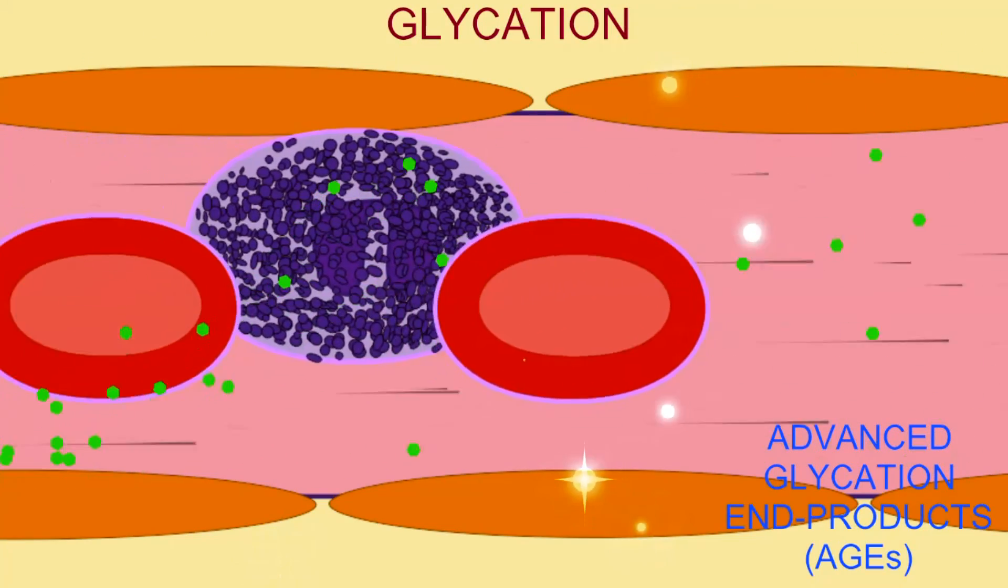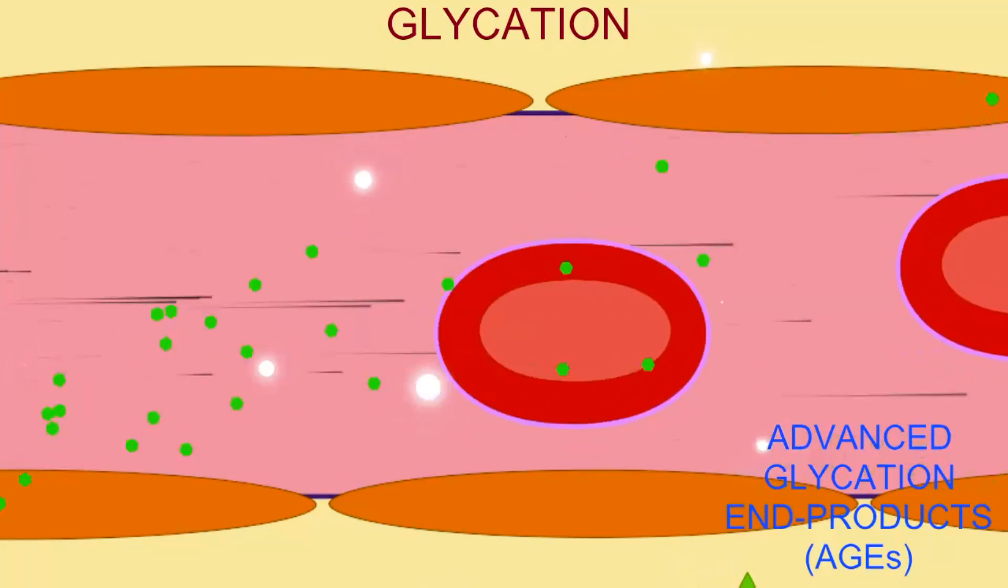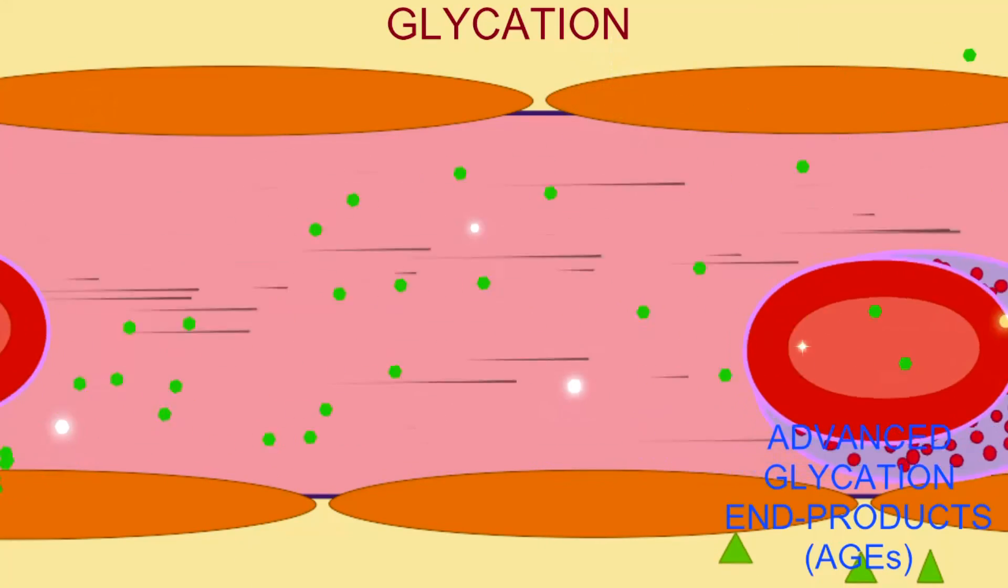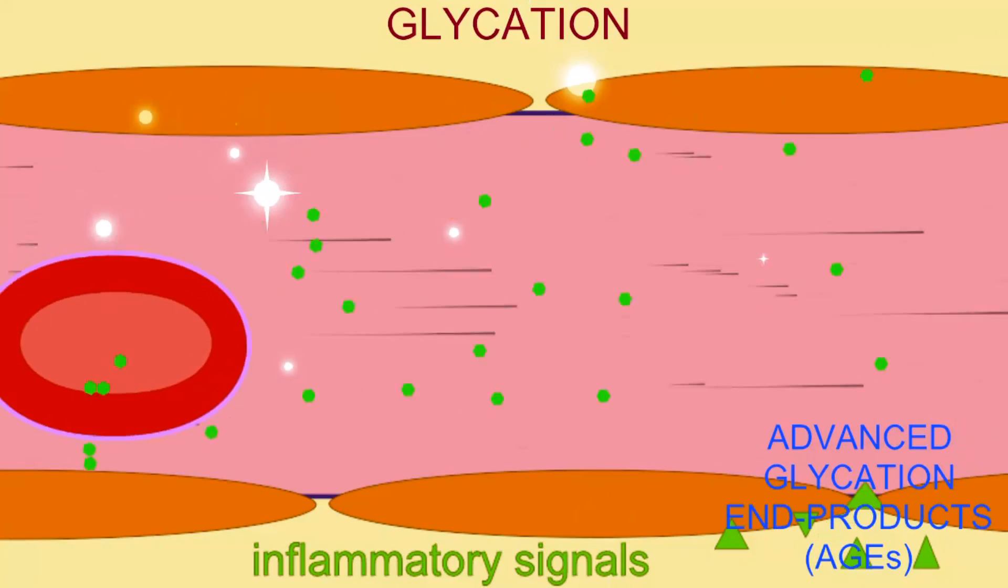The presence of advanced glycation end products can trigger inflammatory reactions from the immune system and cause the release of inflammatory signals, such as interleukins and tumor necrosis factor, and these signals in excess increase the inflammatory state of the body.